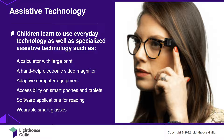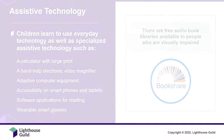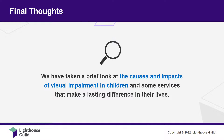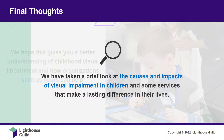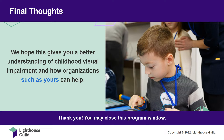There are also audiobook libraries, such as Bookshare, which has almost 1 million books available for free to people who are visually impaired. Today, we have taken a brief look at the causes and impacts of visual impairment in children, and some of the services that can make a lasting difference in their lives. We hope this gives you a better understanding of childhood visual impairment and how organizations can help. Thank you!